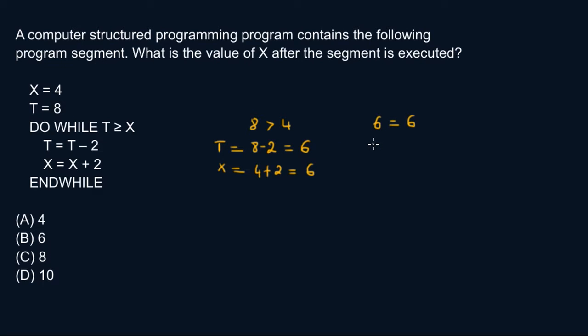And so t is equal to, you're not using your initial t, you're gonna use the newest t, the newest value of t. So this is 6 minus 2, that's 4. And x is equal to x plus 2, so that's 6 plus 2. And that's equal to 8.